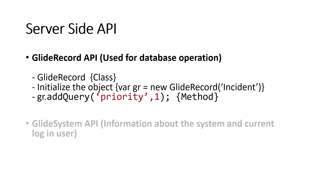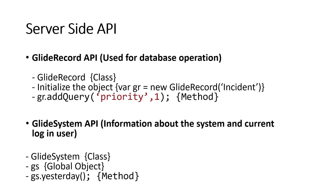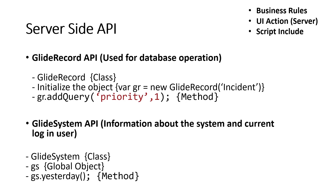The GlideSystem API is also very useful and we'll use it a lot. It provides information about the system and the currently logged-in user. We saw g_user in client-side API — that's for client side only, used in client scripts, UI policies, or client-level UI actions. GlideSystem is for the server side. The class name is GlideSystem and we use the global object gs — for example, gs.yesterday() is a method that returns yesterday's date in GMT time. Server-side APIs are used in business rules, server-level UI actions, script includes, and many other places.